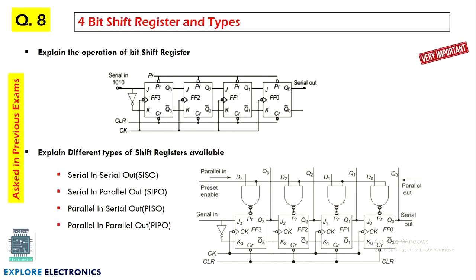The next very important question is a shift register. Here we have a 4-bit shift register designed using JK flip-flops. Different types of shift registers may be asked in the exam: serial in serial out, serial in parallel out, parallel in serial out, and parallel in parallel out. These four can be explained with a single circuit. If parallel input is required, it is fed through the parallel input lines; serial input is from one end; and the outputs Q0, Q1, Q2, Q3 serve as serial out or parallel out. We need to choose the path accordingly.